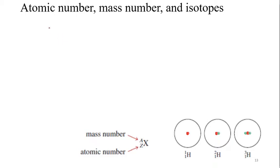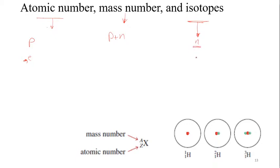They started to organize elements in the periodic table and introduced atomic number, mass number, and isotopes. The atomic number is the number of protons; in a neutral atom it also equals the number of electrons. The mass number is the number of protons plus neutrons. Isotopes are elements of the same type that have different numbers of neutrons. For hydrogen, the atomic number is written at the bottom and the mass number at the top of the atomic symbol.